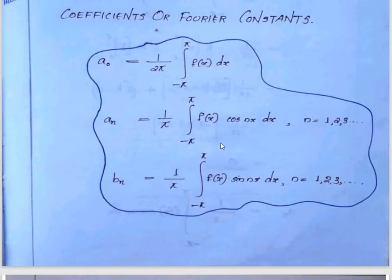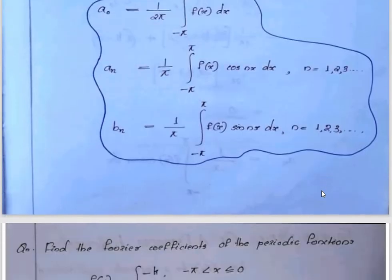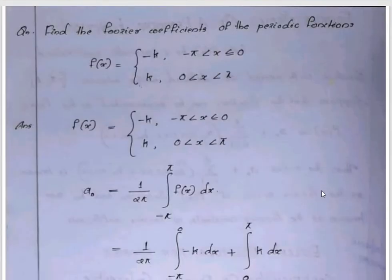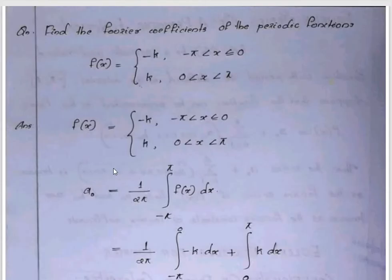The coefficient an is given by 1 over π times the integral from minus π to plus π of f of x cos nx dx, for n equals 1 to infinity. Similarly, bn is the corresponding sine coefficient.